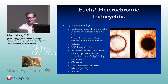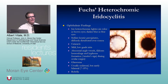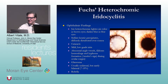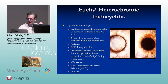Cataracts and elevated pressure are very common. Another board question: if a patient has iris heterochromia and high pressure, and you perform a paracentesis and they have hyphema — that's a so-called Amsler sign. Patients with Fuchs can have small iris vessels in the angle that can bleed, and you can also see this during cataract surgery.